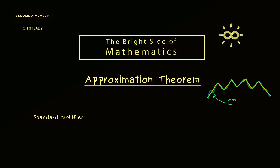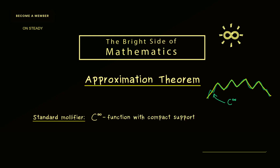Without further ado, let's immediately start the topic by defining the so-called standard mollifier. This is a nice C-infinity function that also has compact support. In one dimension, looking at the graph, it goes smoothly into the zero function, and only on a compact set it has some positive values — it looks like a bump. The idea is to use an exponential function to go smoothly into zero.